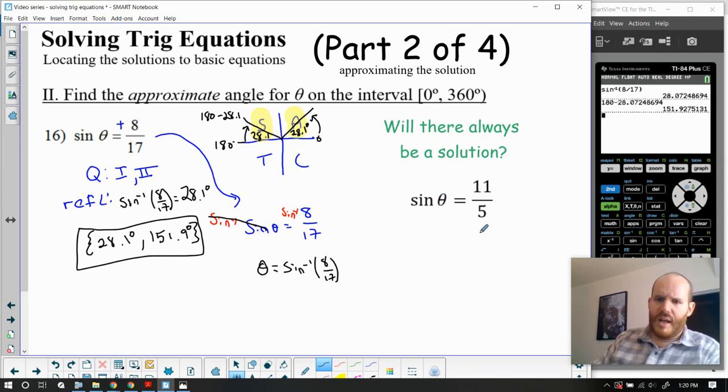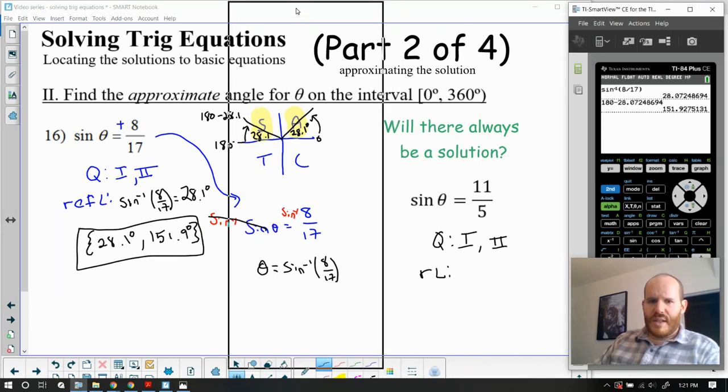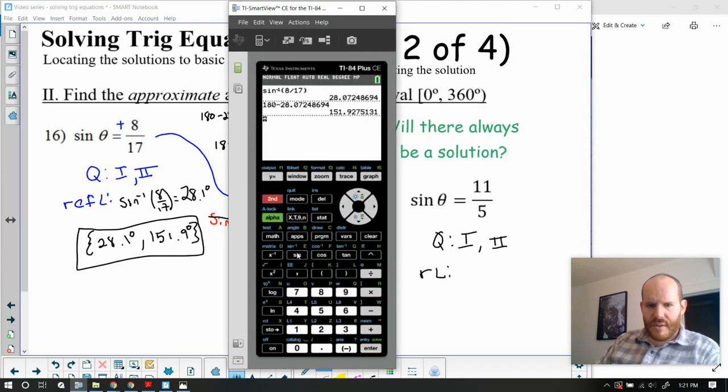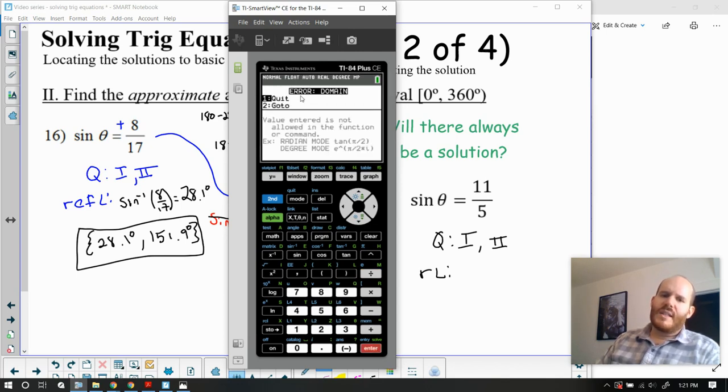So here is an example that does not have a solution. Sine theta equals 11/5ths. And if we were to try to solve this in the same way here, we could go through the steps by identifying the quadrants. If it's positive, it would have to be in either quadrant one or quadrant two, just like my 8/17ths. But when we go to find the reference angle, say you go to the calculator and you try to do the same process we just did. I'm going to go ahead and try to calculate whatever sine inverse of 11/5ths is.